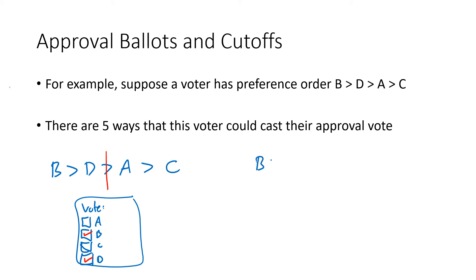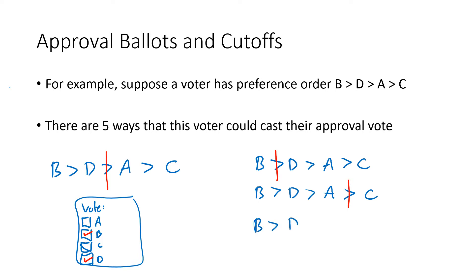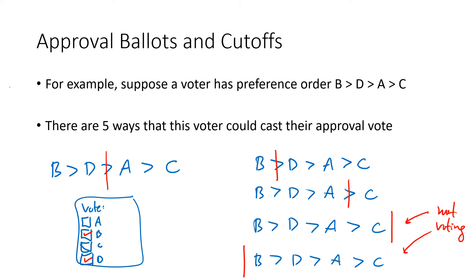But that's not the only option. The voter could draw the line after B only, approving just B. Or they could be generous and approve B, D, and A. They could even approve all four candidates, putting the cutoff at the very bottom. Or they could be extremely picky and approve nobody, putting the line at the very top. These last two ballots are basically the same as not voting — approving no one benefits no candidate, and approving everyone doesn't help any candidate win versus another.